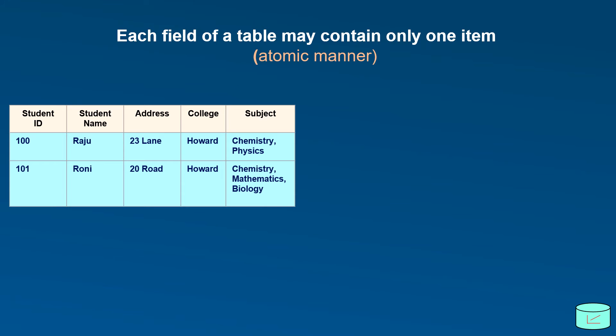As you can see, in this student table, Raju have two subjects, chemistry and physics, in a same field.